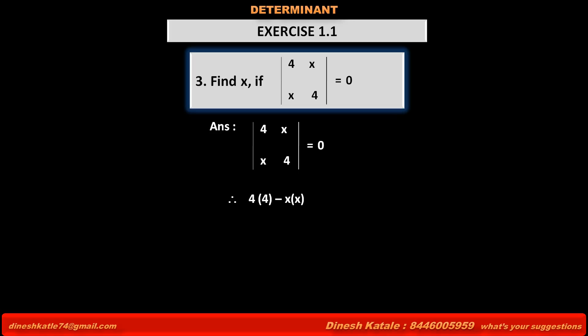Therefore, 4 into 4 means the product of the elements in principal diagonal minus X into X, the product of the numbers in secondary diagonal, is equal to 0.